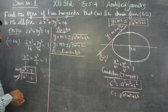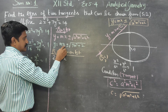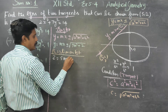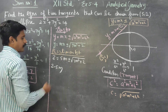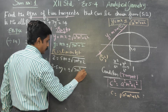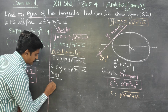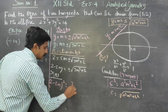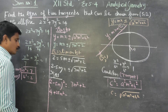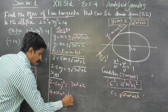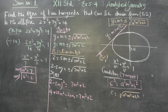Since (5,2) lies on the tangent: 2 = 5m ± √(7m² + 2). Rearranging: (2 - 5m) = ± √(7m² + 2). Squaring both sides: (2 - 5m)² = 7m² + 2. Expanding using (a - b)² = a² + b² - 2ab: 4 - 20m + 25m² = 7m² + 2.